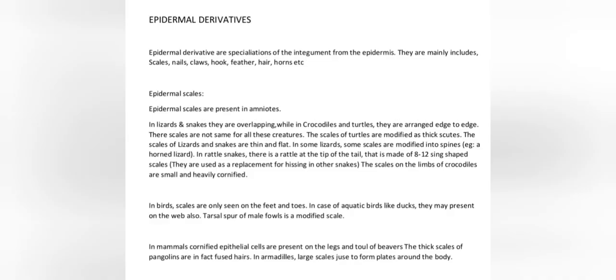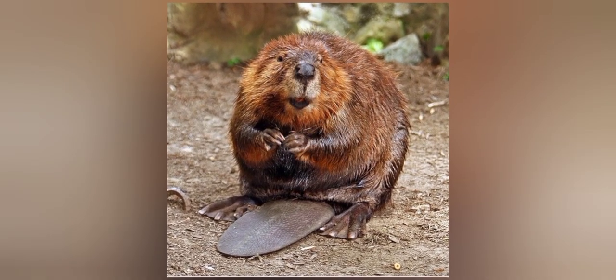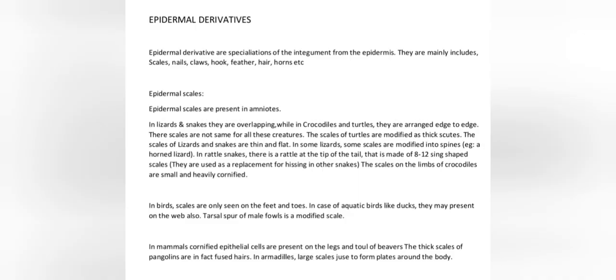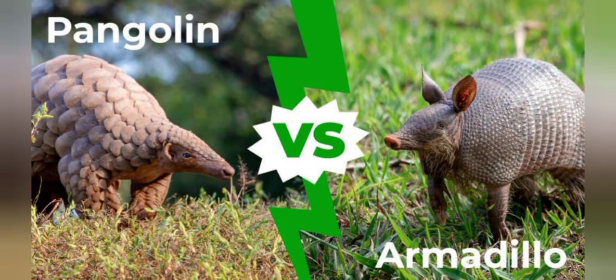In mammals, cornified epithelial cells are present on the legs and tail of beavers. The thick scales of pangolins are in fact fused hairs. In armadillos, large scales fuse to form plates around the body.